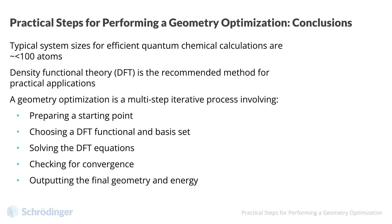In parts 1 and 2 of this video, we learned about typical system sizes for quantum chemical calculations. We explained why DFT is the recommended method for practical applications. Then, we walked through the multi-step, iterative process of geometry optimization. We explained the overall process as well as each step in detail. We provided some fundamental troubleshooting advice. In the next video, we will move beyond just geometry and energy, and discuss other properties that can be extracted from a quantum mechanical calculation.